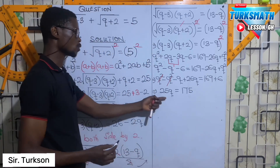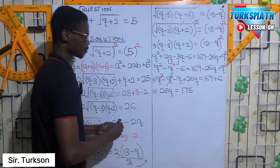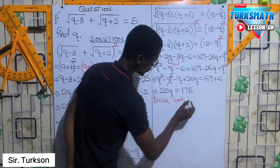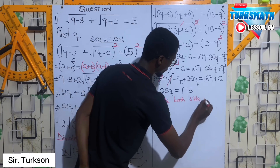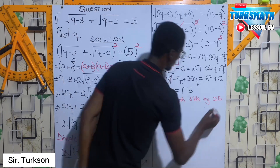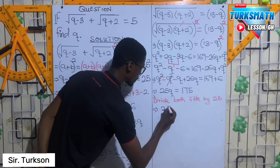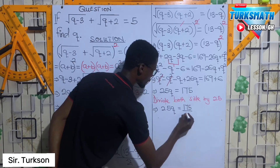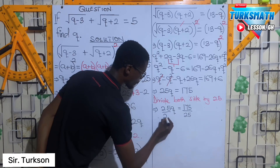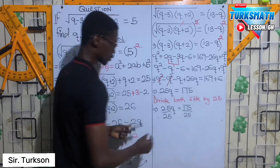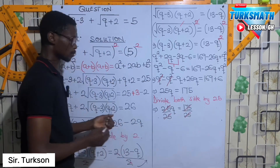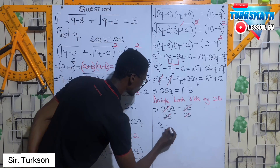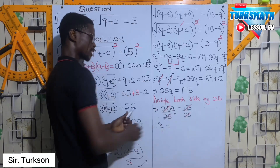Now we are going to divide both sides by the coefficient of Q. Therefore our Q here is 175 divided by 25, which gives us 7.